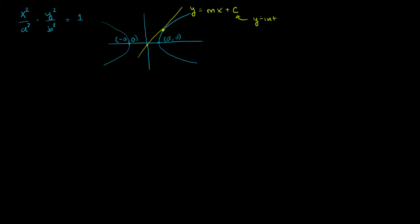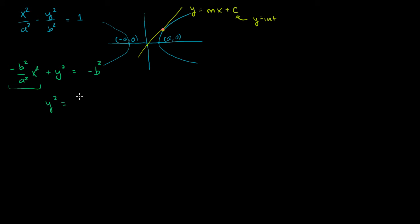Let's see where the hyperbola and the tangent line intersect — the key insight is that they're only going to intersect at one point. I'm going to solve for y² from the hyperbola equation. Multiplying both sides by −b², we get −(b²/a²)x² + y² = −b². Adding to both sides gives y² = (b²/a²)x² − b². So I've just rewritten the hyperbola equation solved for y².